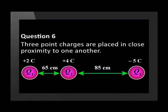Question 6. Three point charges are placed in close proximity to one another. The charges and distances between them are shown here. What is the resultant electrostatic force on Q2 as a result of the other two charges?